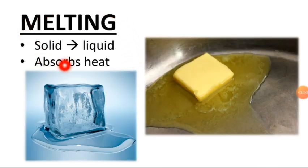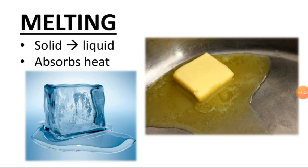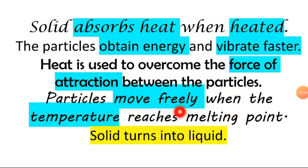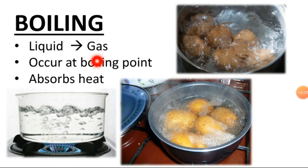Let's go through them one by one. The melting process goes from solid to liquid and absorbs heat. Examples include ice melting and butter melting in a pan when you heat it. During melting, the solid absorbs heat; the particles obtain energy and vibrate faster. Heat overcomes the force of attraction between particles, and they move more freely when the temperature reaches the melting point, turning the solid into liquid.